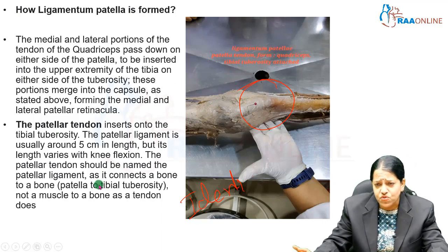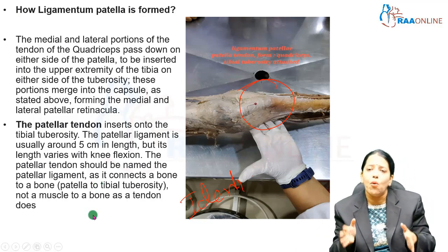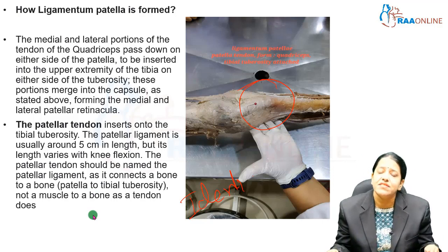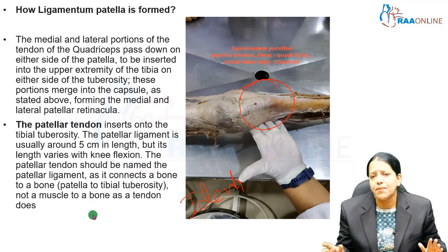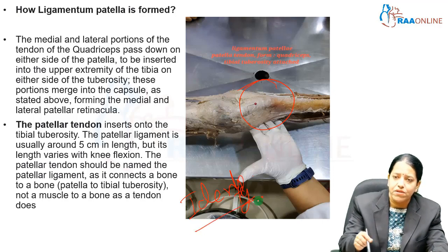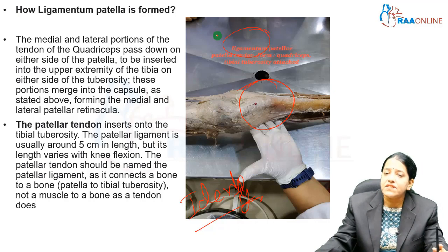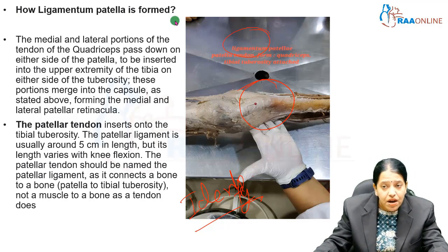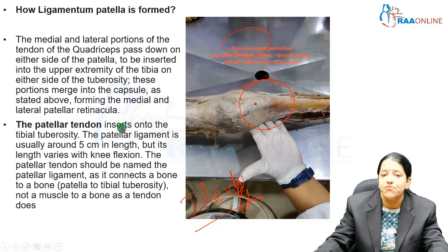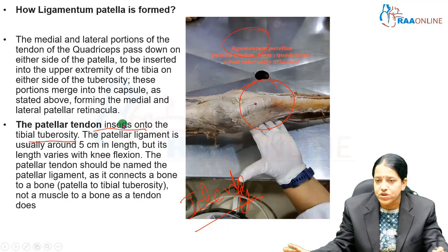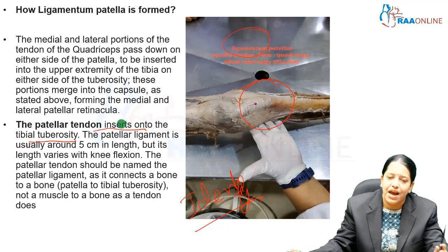This can also come as a short note question, which is why I have included a little more theory in these tag questions. The ligamentum patellae is the spot identifier giving you the first half of the marks. The tag question can be either how it is formed, or where it is inserted — those are the two most likely tag question options.